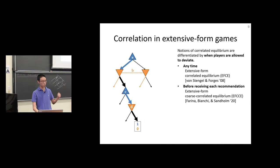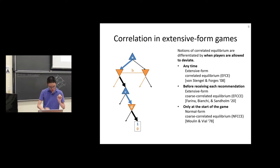An extensive form coarse correlated equilibrium is a mediator profile such that no player wants to deviate before receiving a recommendation. Once an agent sees a recommendation, they have to play it. The agent is allowed to not see a recommendation, in which case they can do whatever they want. But the moment they see a recommendation, they're bound to play it.